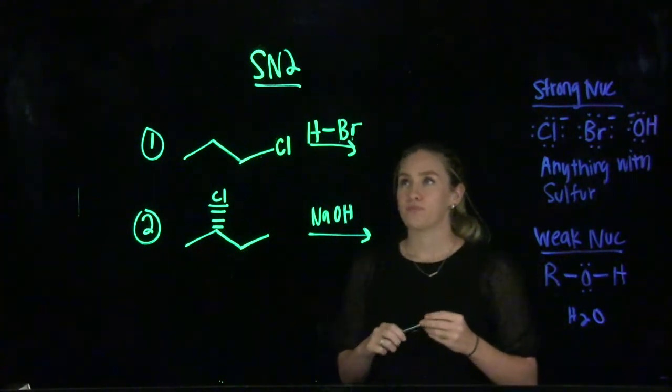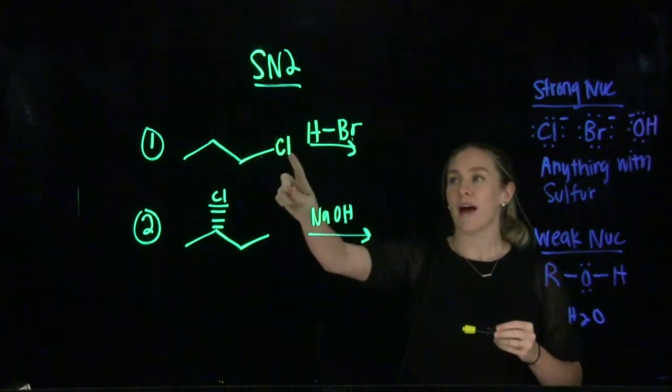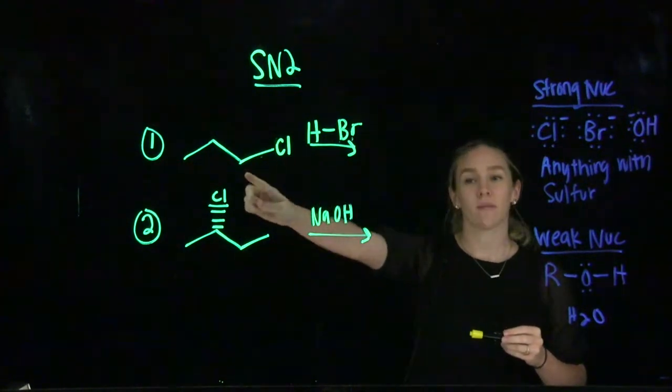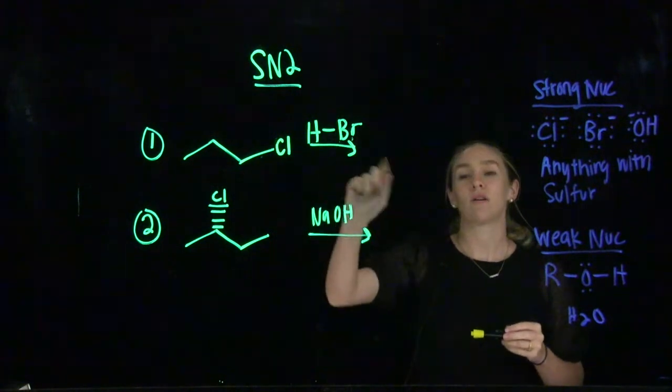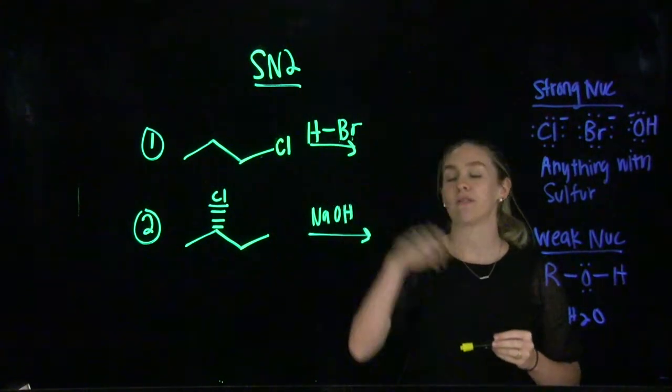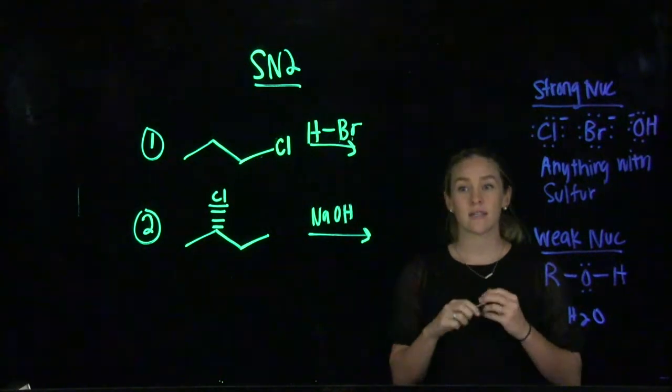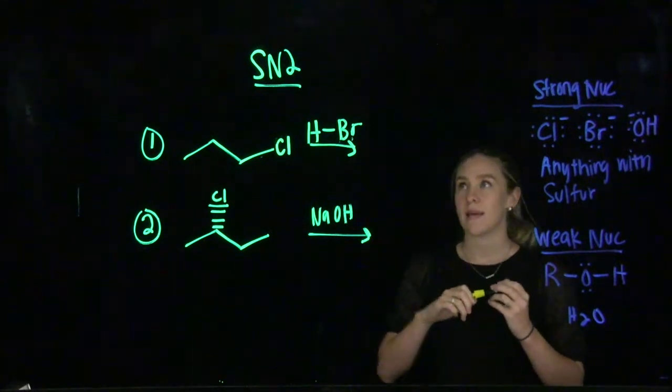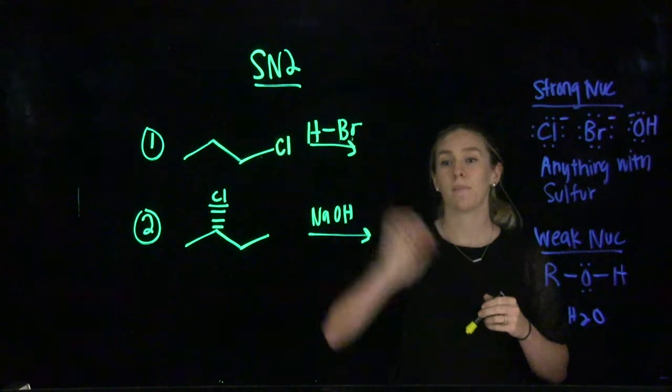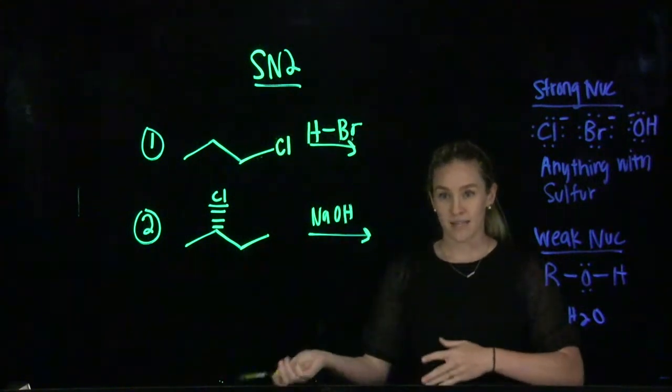Just by looking at this reaction, we have a leaving group with a primary electrophile, and we also have a very strong nucleophile that we're reacting it with. Both of those things right there are really good signs that this is going to take place through the SN2 mechanism instead of the SN1 mechanism.